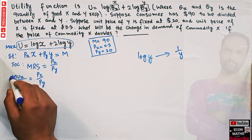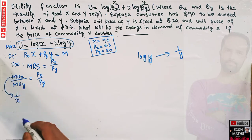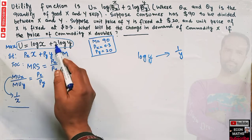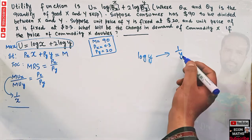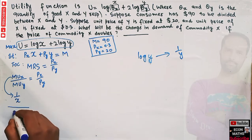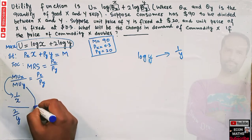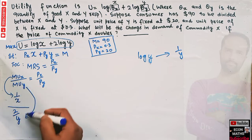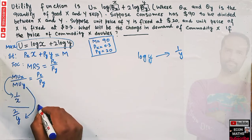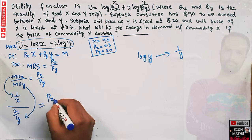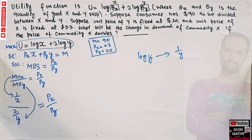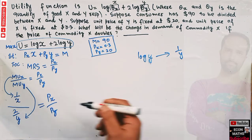The marginal utility of good X is 1/X. The derivative of 2·log(Y) with respect to Y is 2/Y, so the marginal utility of good Y is 2/Y. Setting MRS equal to the price ratio gives us: (1/X) / (2/Y) = Px/Py.